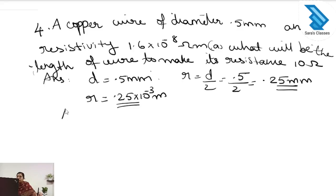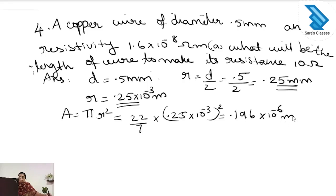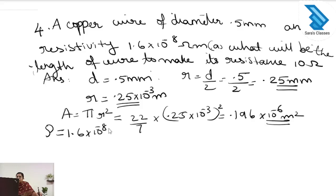Next, find the area of cross section: A = π r². Using 22/7 times (0.25 × 10⁻³)², we get 0.196 × 10⁻⁶ m². The resistivity rho is 1.6 × 10⁻⁸ ohm meter and the resistance is 10 ohm.